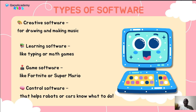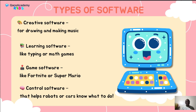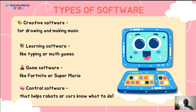Types of software: creating software for drawing and making music; learning software like typing or math games; game software like Fortnite or Super Mario; and control software that helps robots or cars know what to do.